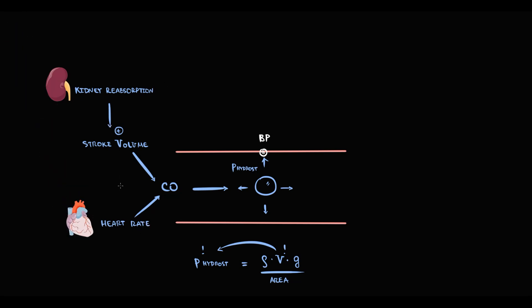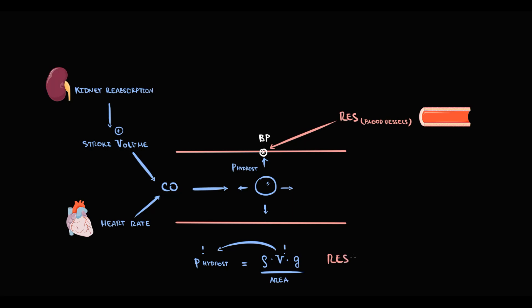There is also an additional factor that determines blood pressure: the resistance of blood vessels. The major factor that determines resistance is the radius of the blood vessel. The more contracted the blood vessel, the smaller the radius, and thereby the higher the resistance. And the higher the resistance, the greater the pressure on the blood vessel wall, and thereby the higher the blood pressure we measure.